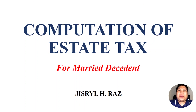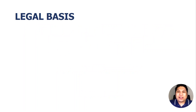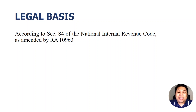In our previous video, we discussed how to compute the estate tax for a single unmarried decedent. In this video, we're going to talk about the estate tax of a married decedent. Our legal basis in imposing and computing an estate tax is according to Section 84 of the National Internal Revenue Code, or our tax code, as amended by RA 10963.